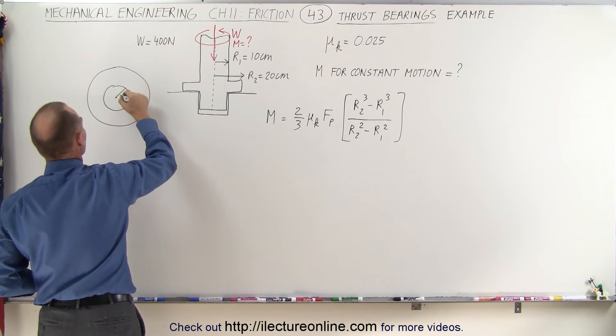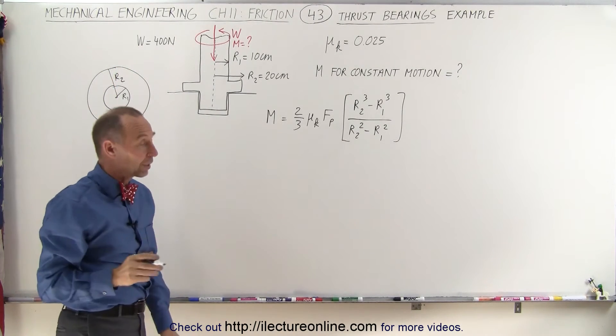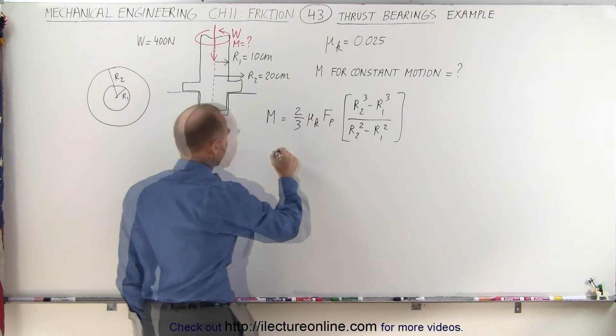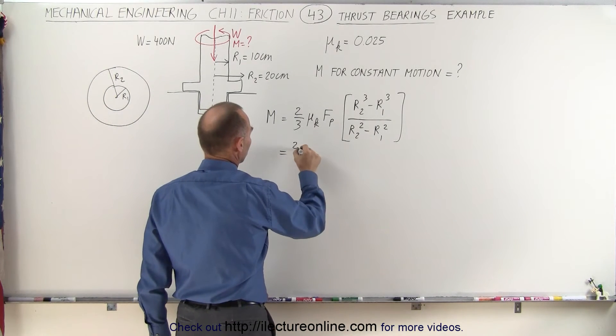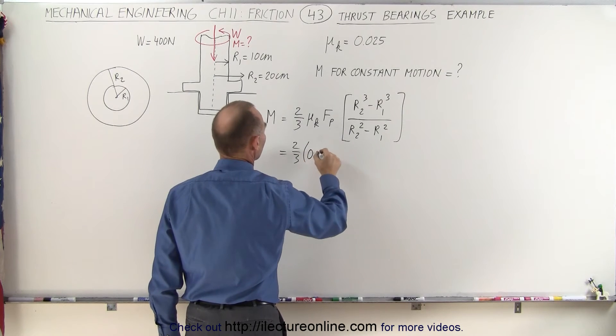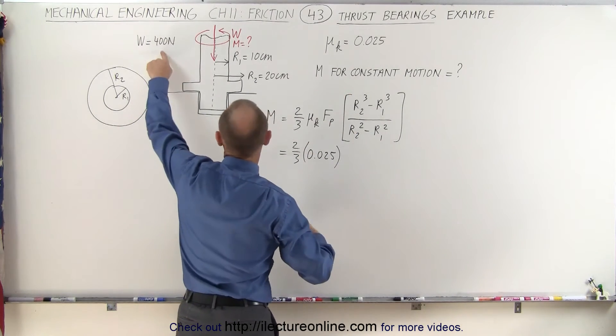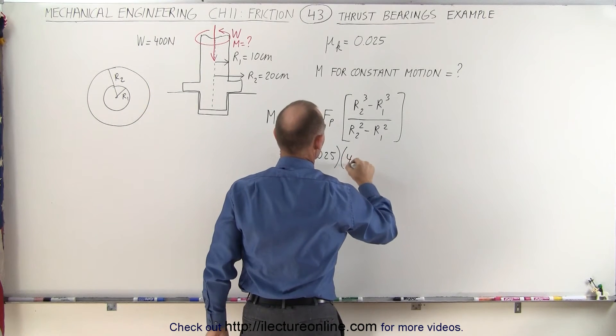So here would be r1 and there would be r2. All right, so let's plug in the values and see what we get. This is equal to two-thirds times the coefficient of friction, 0.025, times the force of the push, which is equal to the weight right here, 400 newtons,